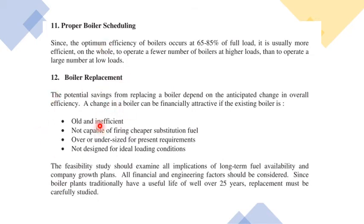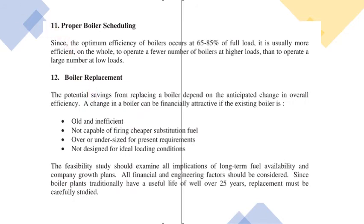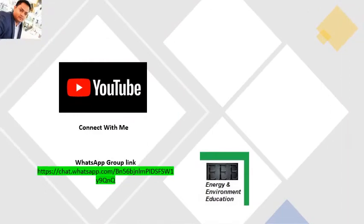These 12 points are the key energy conservation opportunities in boilers. In the exam, they may ask you to name 5 or 10 such measures, or to explain each one. All these highlighted points can be understood and explained easily. This concludes the content part of the video. The numerical part, objective questions, short answer, and long answer sections for this chapter are still to come in future videos.